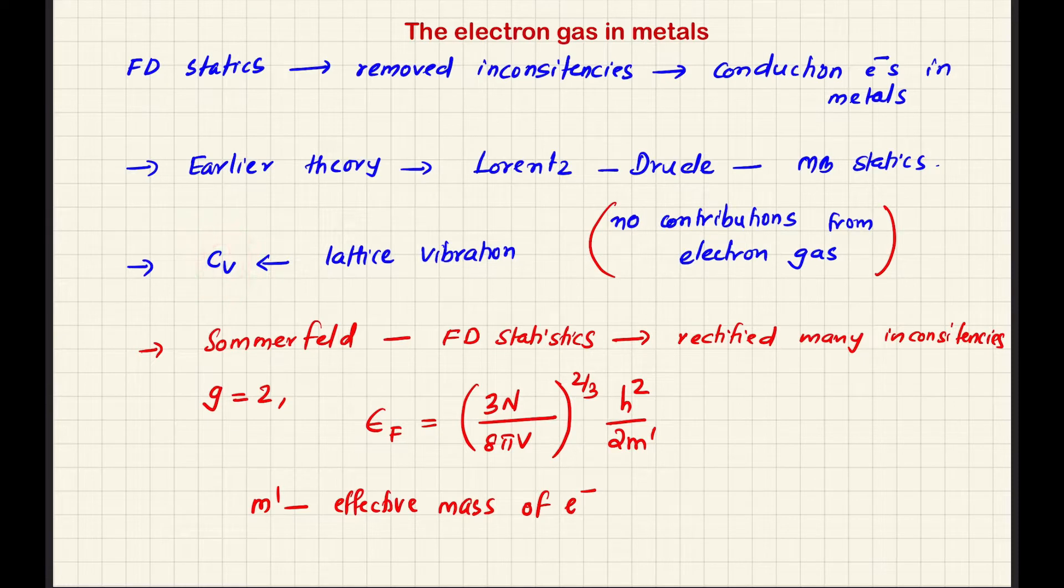Specific heat of metal Cv in the Lorentz-Drude model includes specific heat of lattice vibration contribution, where the metal lattice vibration phenomena is specified in the expression. But in the Lorentz-Drude model, there is no significant contribution from electron gas.